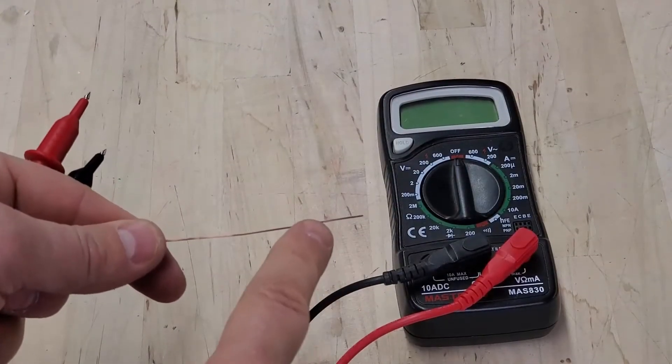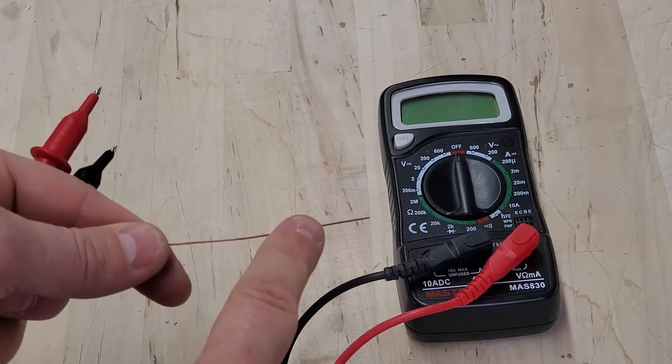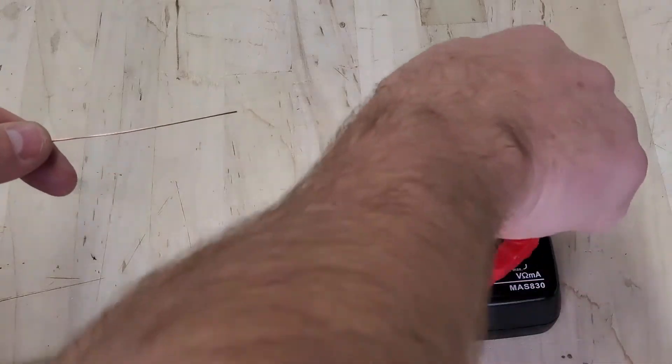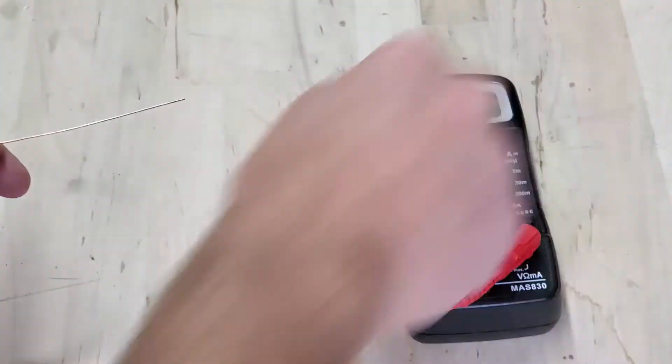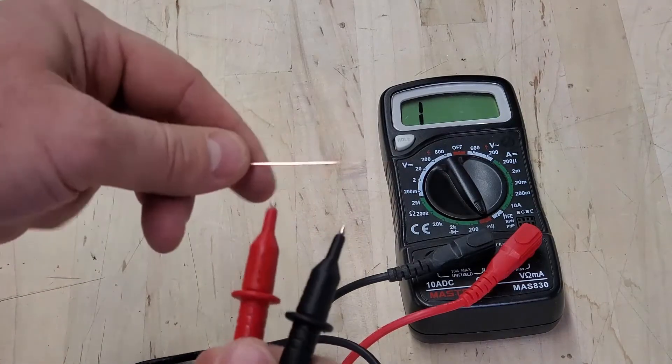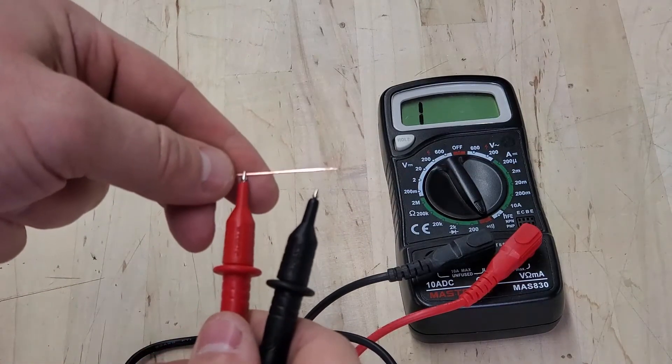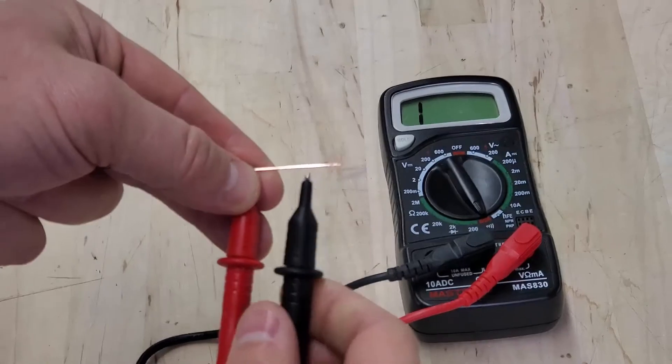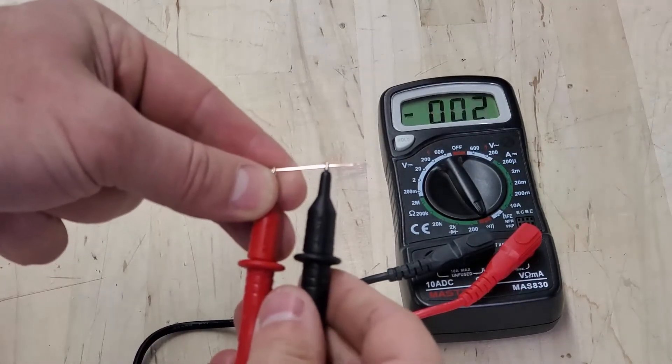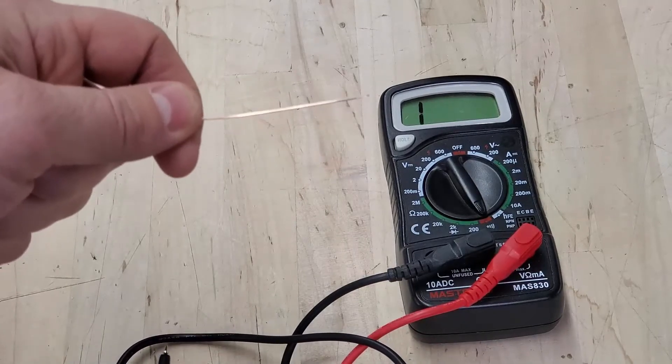To make sure we removed the plastic coating on our wire, we're going to test for conductivity with our multimeter. Go ahead and turn your multimeter to this beep setting here. Take your multimeter probes and place both ends on your magnetic wire. If you removed the plastic coating on your wire, you should hear a beep. Go ahead and do this for both sides of your magnetic wire.